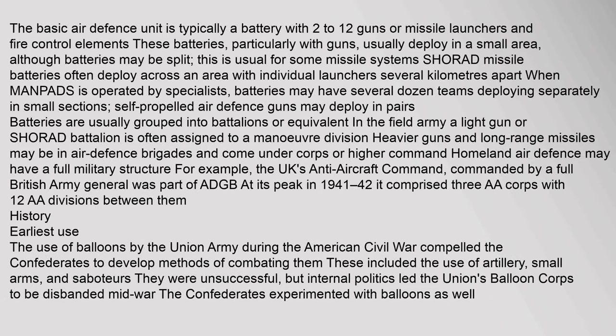The basic air defense unit is typically a battery with 2–12 guns or missile launchers and fire control elements. SHORAD missile batteries often deploy across an area with individual launchers several kilometers apart. When MANPADS is operated by specialists, batteries may have several dozen teams deploying separately. Batteries are usually grouped into battalions; a light gun or SHORAD battalion is often assigned to a maneuver division, while heavier guns and long-range missiles may be in air defense brigades. At its peak in 1941–42, the UK's Anti-Aircraft Command comprised three AA Corps with 12 AA divisions.